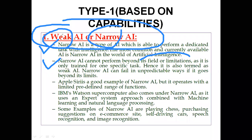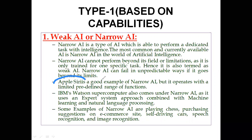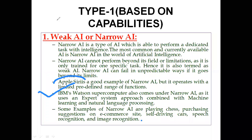Some examples of Weak or Narrow AI include Apple's Siri, which operates with a limited predefined range of functions; IBM Watson Supercomputer; self-driving cars; speech recognition systems — where you cannot perform unrelated tasks like earthquake detection; and image recognition systems. All of these are examples of Narrow AI.